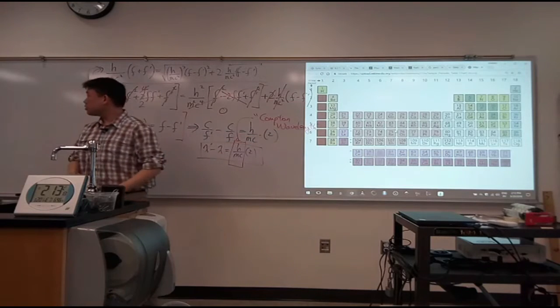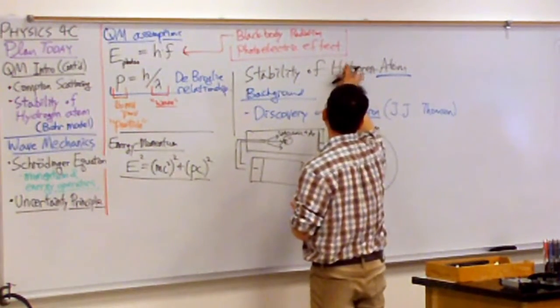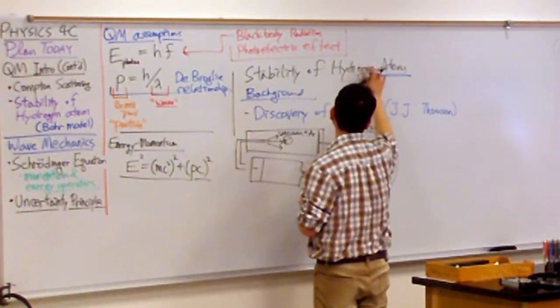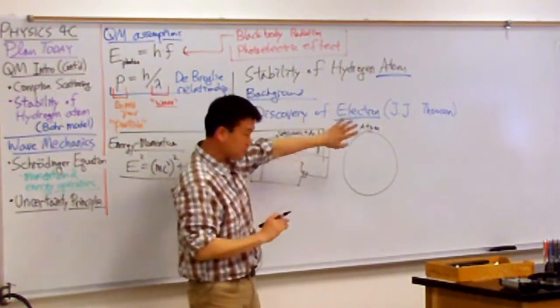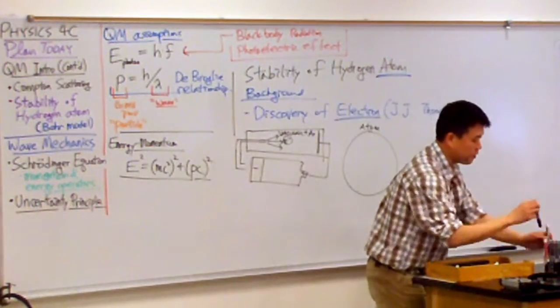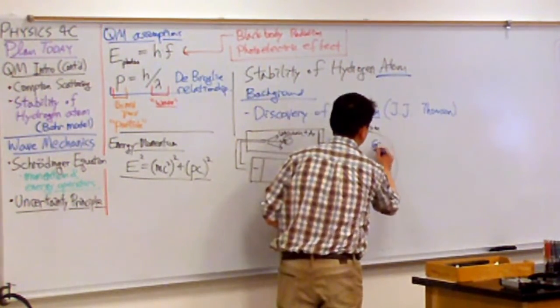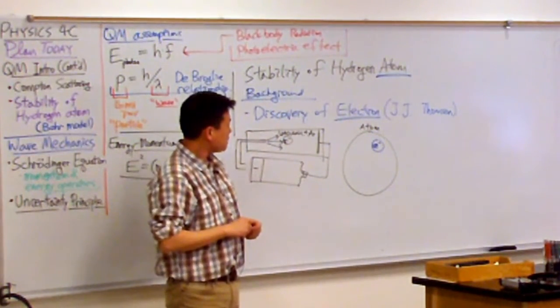That's why we are looking at specifically stability of the hydrogen atom. From this discovery of electron and the experiments that they have done, they know that this atom must contain inside electrons somewhere.